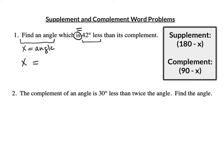Students often mess this up. They see "42 less" and they want to go 42 minus because they realize that less means subtract. But the problem is, you're not subtracting 42 if you go 42 minus. "42 less" means I'm going to subtract 42 from something — 42 less than its complement. So the complement we just talked about was 90 minus x.